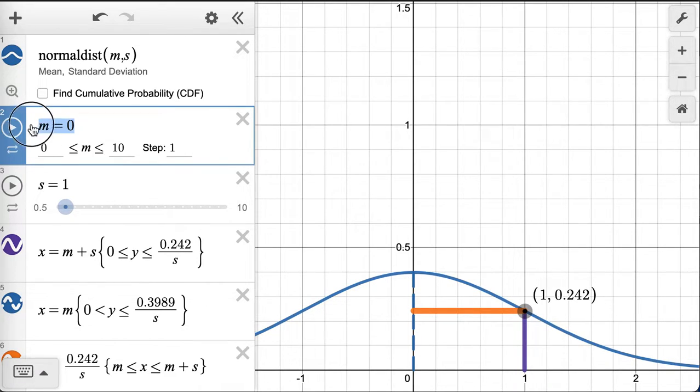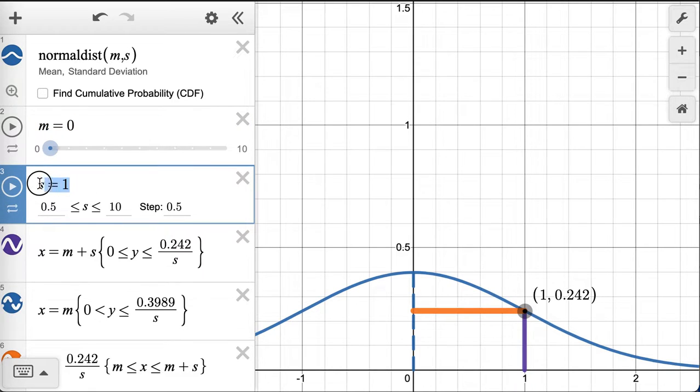And the mean is set to 0, and the standard deviation is set to 1. M is a mean, S is a standard deviation.